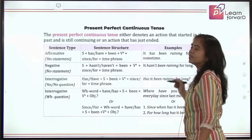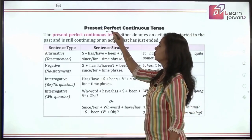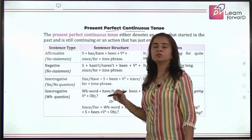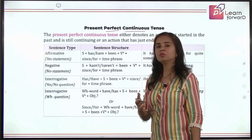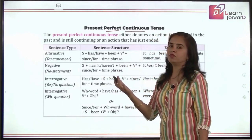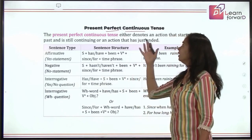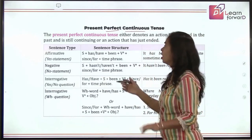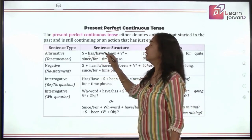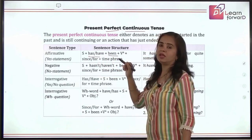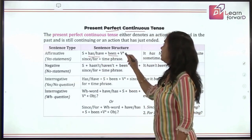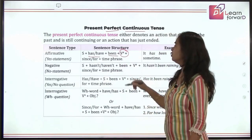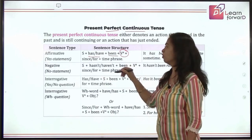Now we'll be doing present perfect continuous tense. Perfect continuous means 'has/have' will also be there — combining the formation of perfect tense and continuous tense. So the structure is: has/have + the third form of verb 'be' + the main verb in its '-ing' form, which is the fourth form of verb. For example: It has been raining.